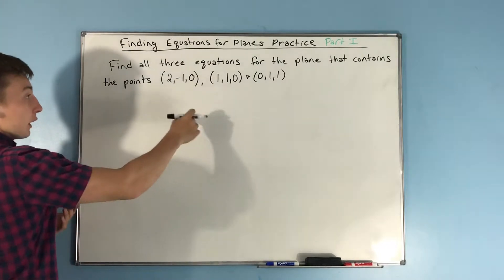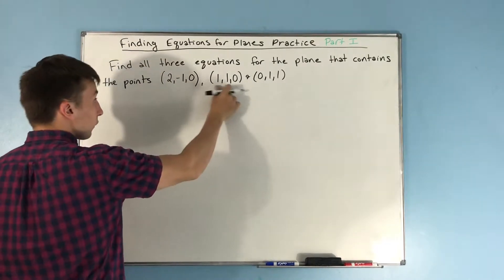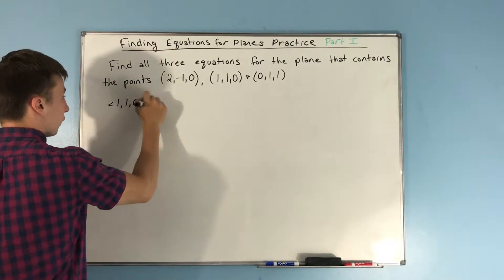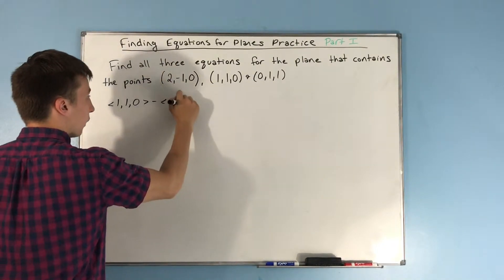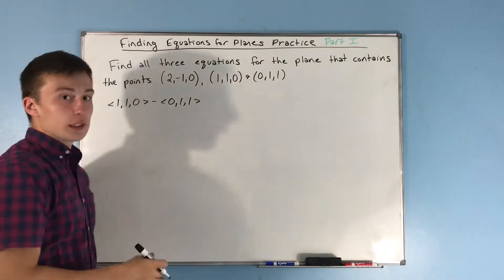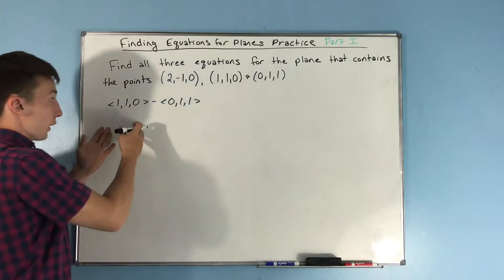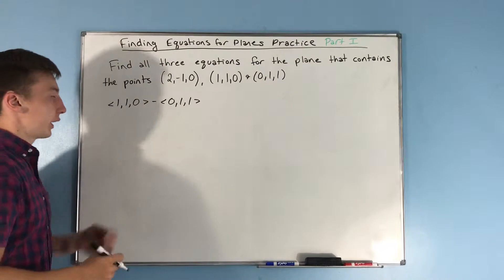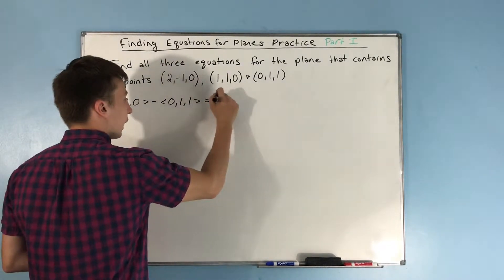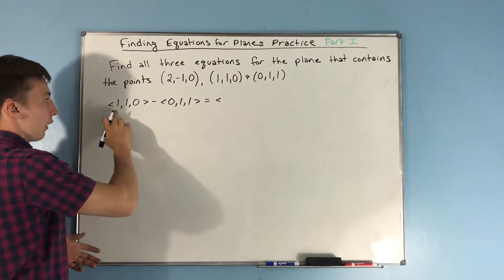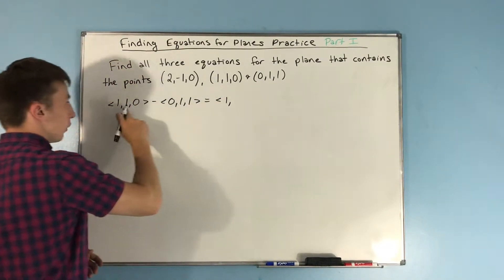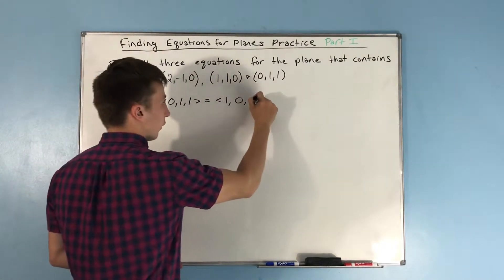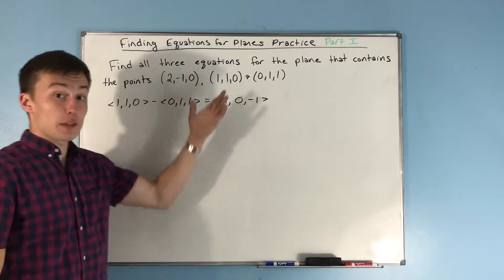We can find a vector from (1,-1,0) to (0,-1,1) by just subtracting them: (1,-1,0) minus (0,-1,1). Writing these as position vectors, we get 1-0=1, -1-(-1)=0, and 0-1=-1. So here's one vector on this plane: (1, 0, -1).